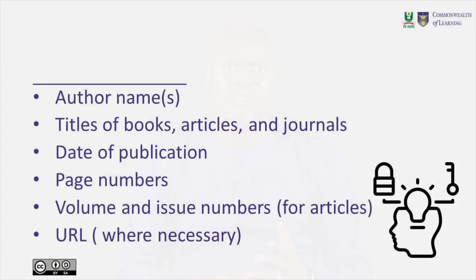Citations consist of standard elements and contain all the information necessary to identify and track down the publishers, which include the author's name, title of the book, article and journal, date of publication, page numbers, volume and issue numbers, and URL linked to the site where necessary.